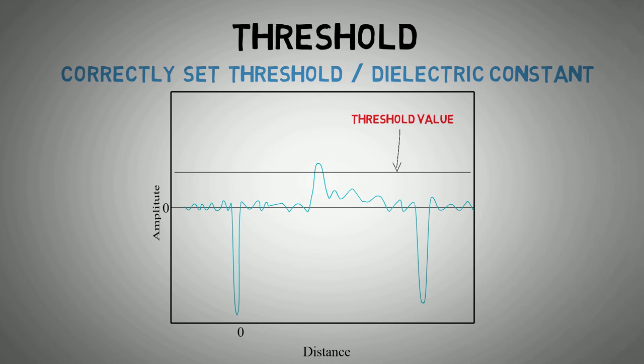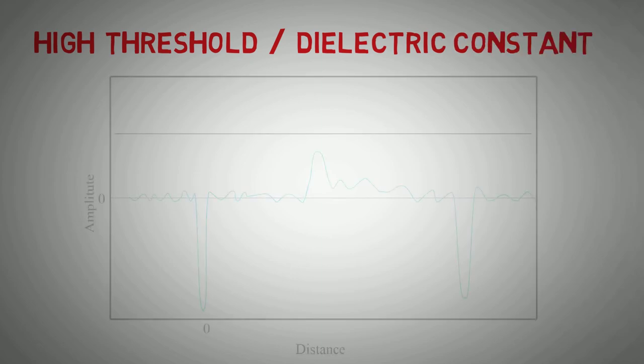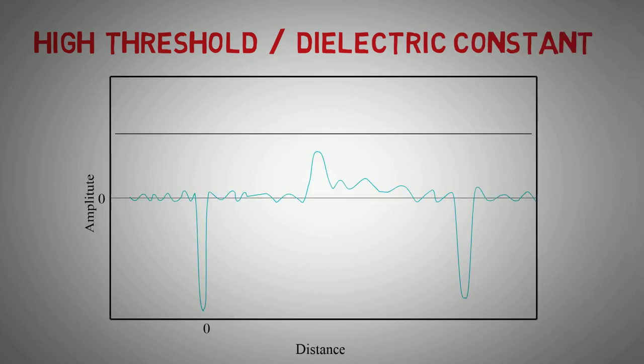If the dielectric constant is set up incorrectly, the level amplitude threshold will also be incorrect. Depending on the values selected, an incorrect dielectric constant could cause a number of issues. In the first instance, the threshold will be set too high. Looking at a threshold that is set too high, this causes the surface reflection to be ignored, meaning the transmitter will read zero.